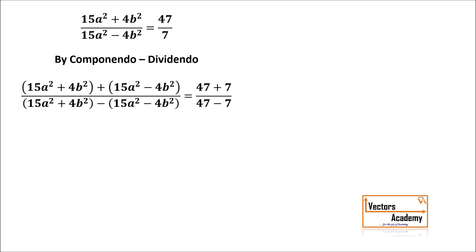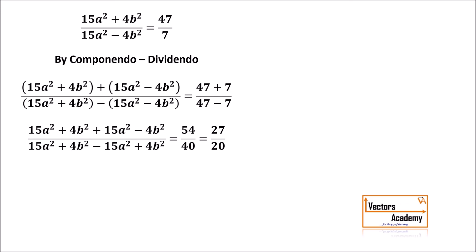On the left-hand side, in the numerator there is 4B² positive and 4B² negative, so they cancel out. In the denominator, 15A² positive and negative cancel as well. Adding in the numerator gives 15A² plus 15A² equals 30A², and in the denominator 4B² plus 4B² equals 8B², giving 30A²/8B² equal to 27/20. Reducing the left side by 2 gives 15A² upon 4B² equal to 27 by 20.